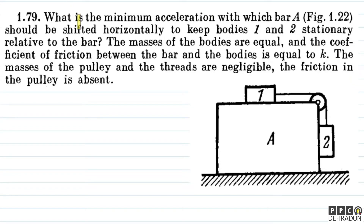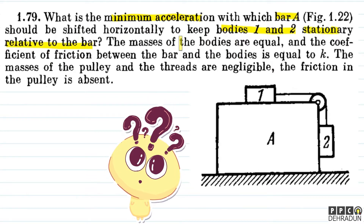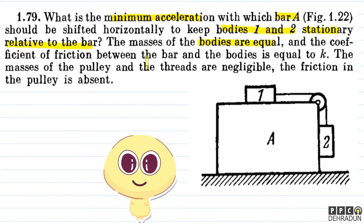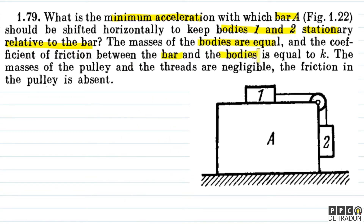The question says: what is the minimum acceleration with which bar A should be shifted horizontally to keep bodies 1 and 2 stationary relative to the bar? The masses of the bodies are equal and the coefficient of friction between the bar and the bodies is equal to K. The masses of the pulley and the threads are negligible, and friction in the pulley is absent.